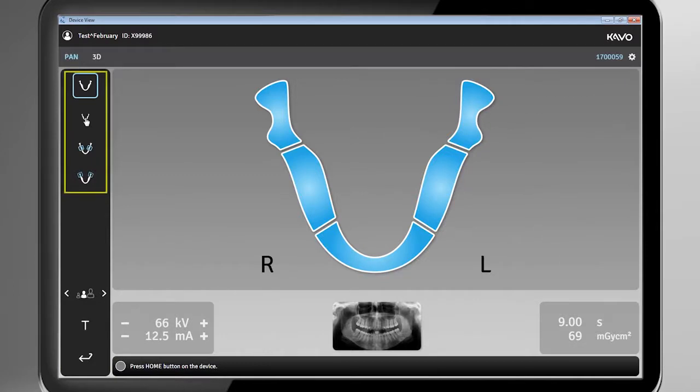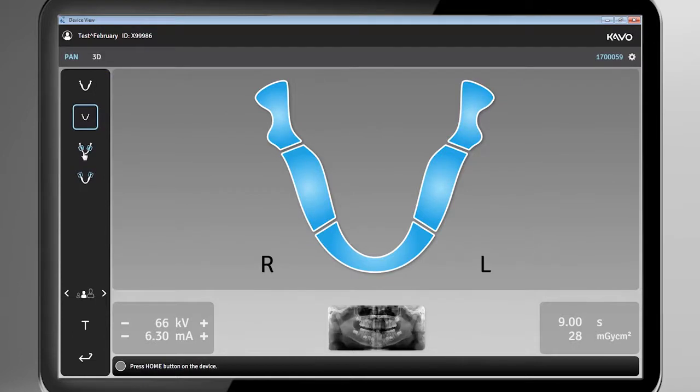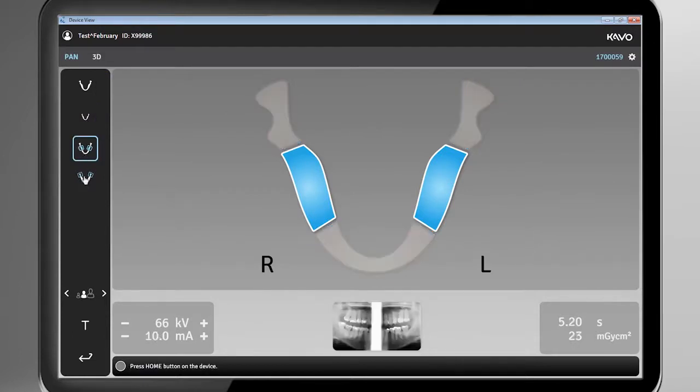There are four types of panoramic imaging programs: standard panoramic, pediatric panoramic, bitewing, TMJ, and TMJ lateral.